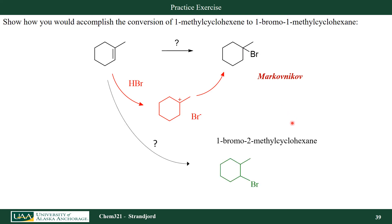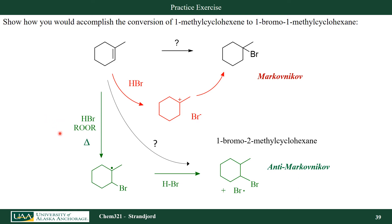How about if I wanted to form the anti-Markovnikov product — in other words, 1-bromo-2-methylcyclohexane? In that case, I'm just going to add some peroxide to my reaction vessel to form the radical process, where my tertiary radical is more stable than the secondary, and then I add the hydrogen to the most stable radical. Anti-Markovnikov addition of HBr across the double bond.